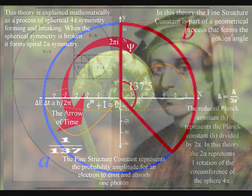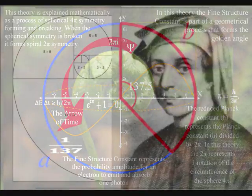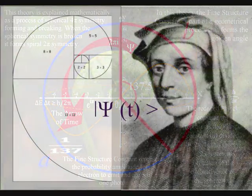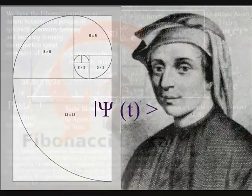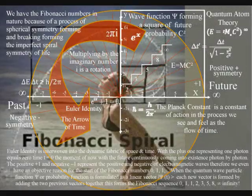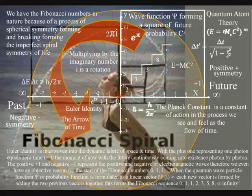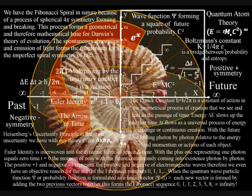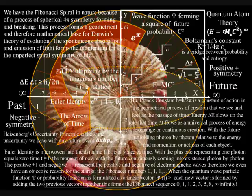All the information I can find says that each new vector is formed by adding the two previous vectors together. This forms the Fibonacci sequence. In this theory, we have the Fibonacci numbers in nature not because of economy of growth or space, but because time and space is being formed by the geometry and therefore the mathematics of this dynamic process.